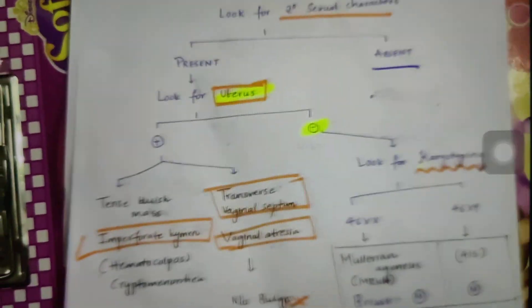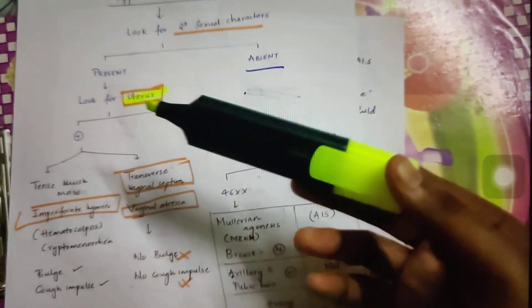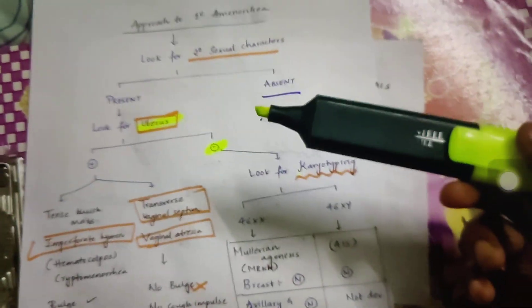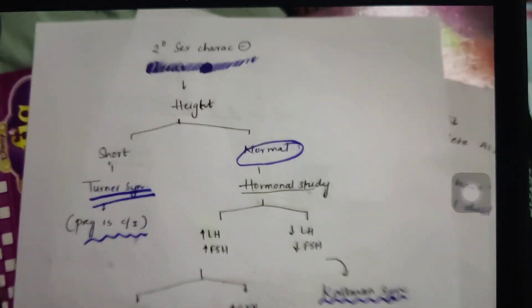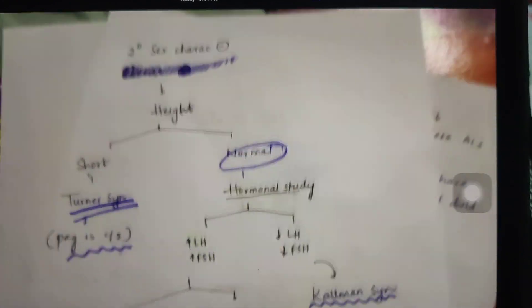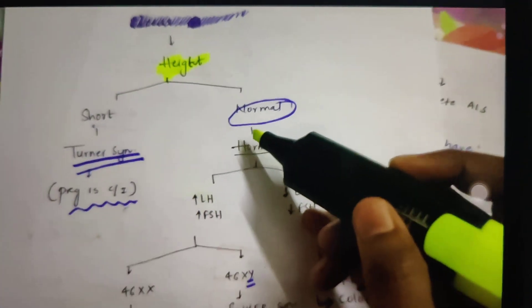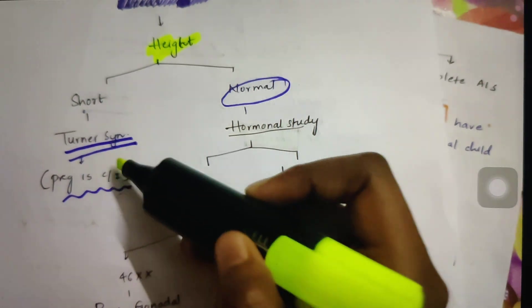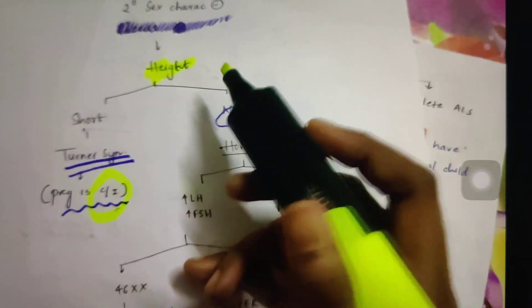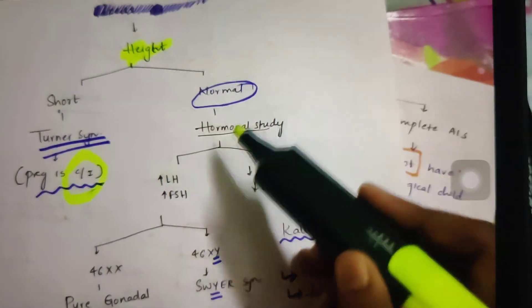Till now we have learned about the conditions where uterus is present and secondary sexual characteristics are present. Now let us go to the other half of the flowchart where secondary sexual characteristics are absent. When secondary sexual characteristics are absent, then look for height of the patient. If the patient is short, then go for Turner syndrome. In Turner syndrome, pregnancy is contraindicated usually. When the height of the patient is normal, then you need to do hormonal study.